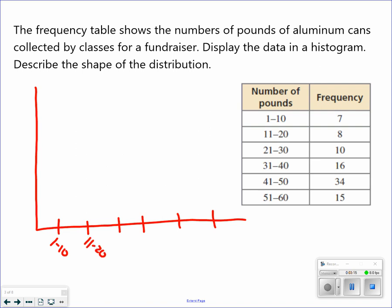The first range is 1 to 10, next one's 11 to 20, 21 to 30, 31 to 40, 41 to 50, and 51 to 60. This data goes all the way up to 34, so I'm really going to need to make sure I go by an increment that can get all of those. I'm still going to go by 5.